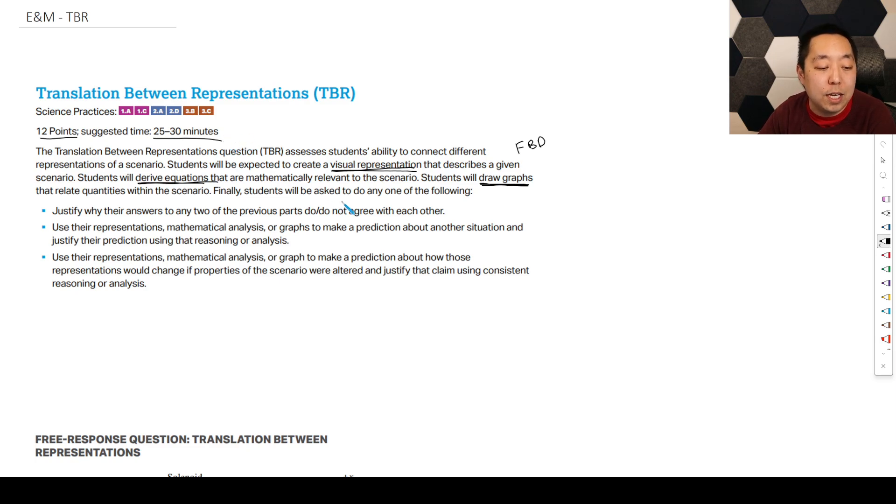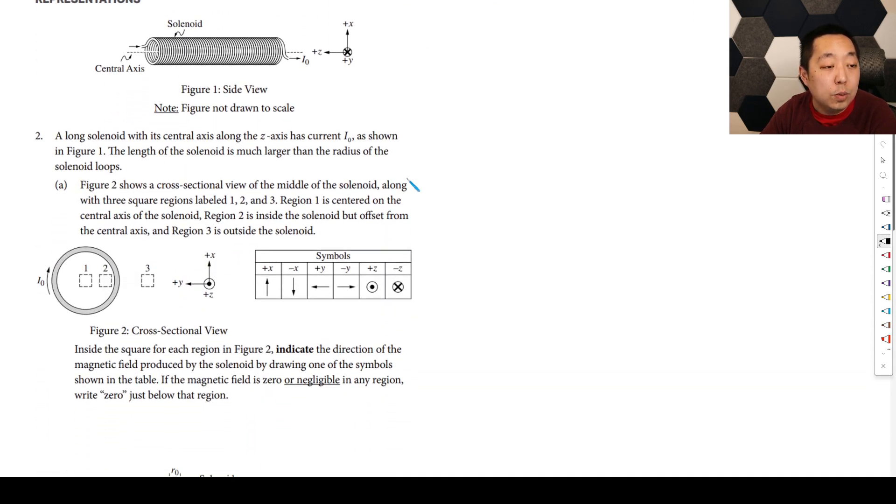So let's go through one of the examples of a translation between representations, or I'm going to call it TBR for short. We have this long solenoid with a central axis along the z-axis with a current I0 as shown. The length of the solenoid is much larger than the radius.